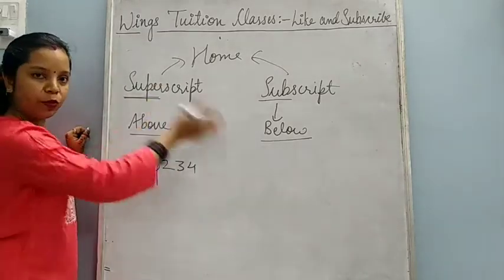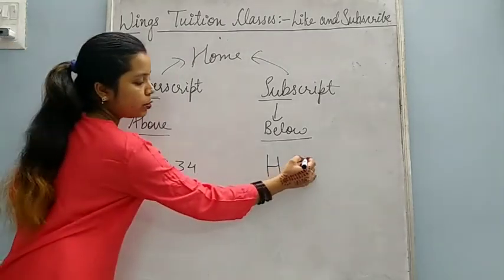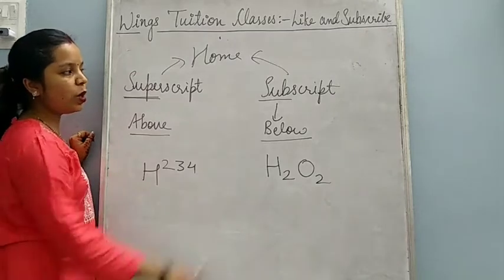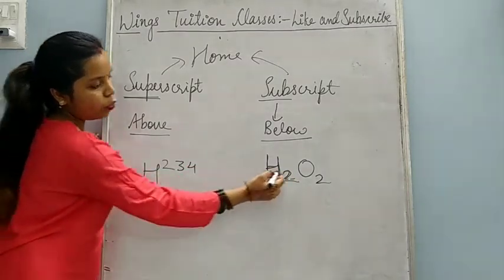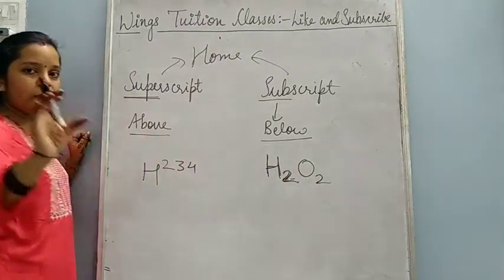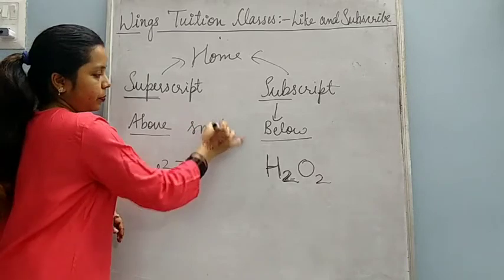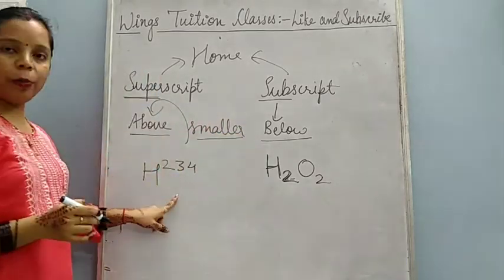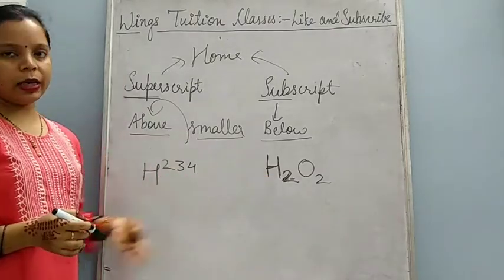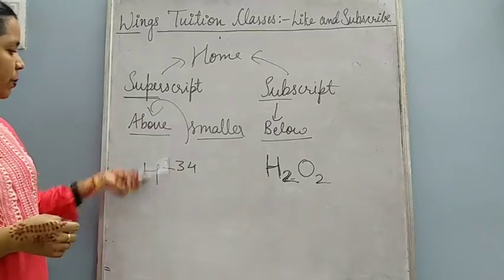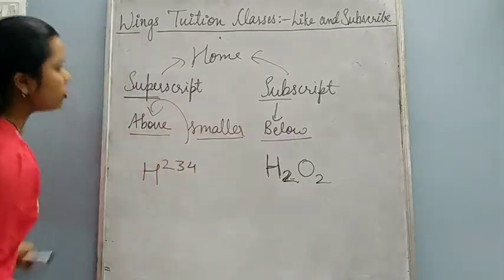Now what does Subscript do? This is the opposite — Subscript makes the text smaller and writes it below the normal line. You might have seen these formulas in chemistry. To write these formulas in MS Word, we use Subscript. Suppose we write H, and now we want to write 2 — you click on the Subscript button, then type 2, and you will see that 2 comes down in small size. That is known as Subscript. Superscript means above the normal line, Subscript means below the normal line. You can use it for alphabets, letters, symbols — anything.